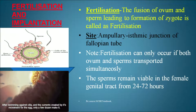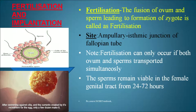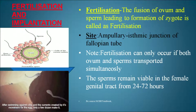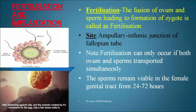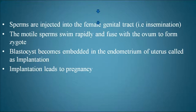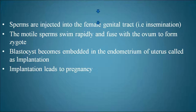The fusion of ovum and sperm leading to formation of a zygote is called fertilization. This event takes place at the ampullary-isthmic junction of the fallopian tube. Fertilization can only occur if both ovum and sperm are transported simultaneously. Sperms remain viable in the female genital tract for 24 to 72 hours. Sperms are injected into the female genital tract via the penis — this process is called insemination. Motile sperms swim and fuse with the ovum to form a zygote. The blastocyst becomes embedded in the endometrium — called implantation — which leads to pregnancy.